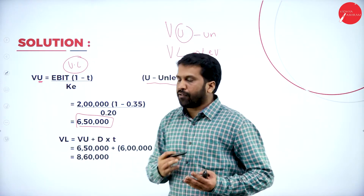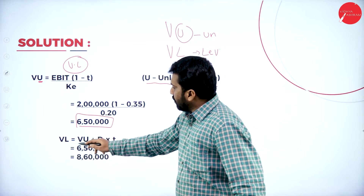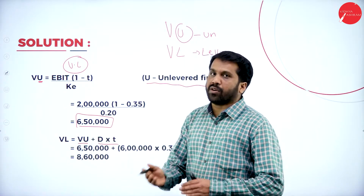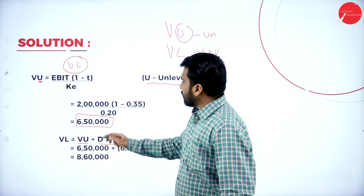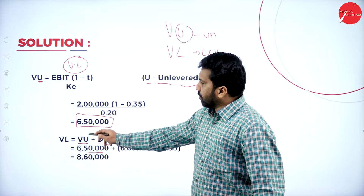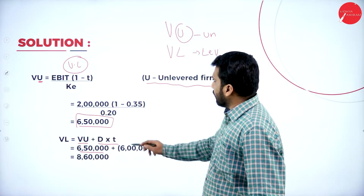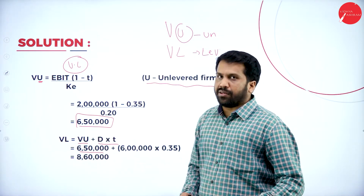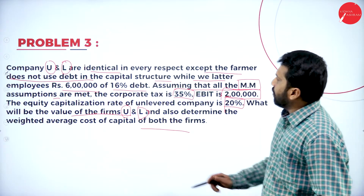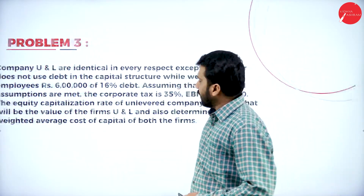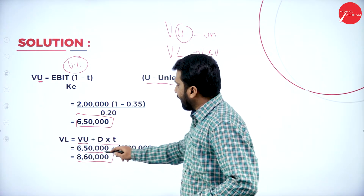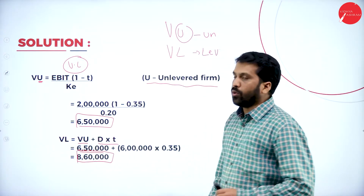Step 2 — Value of levered firm L: VL = VU + (D × T) = 6,50,000 + (6,00,000 × 0.35) = 6,50,000 + 2,10,000 = Rs. 8,60,000.